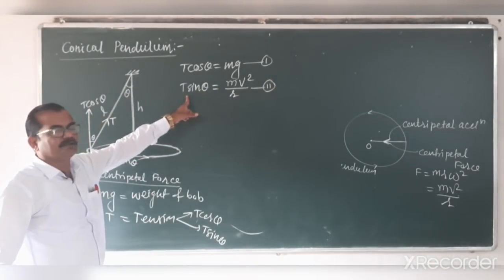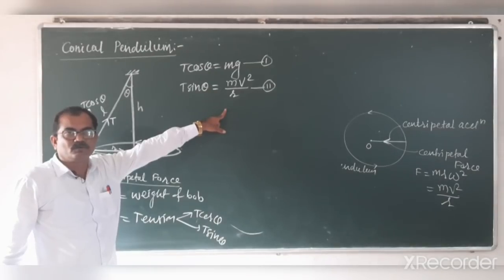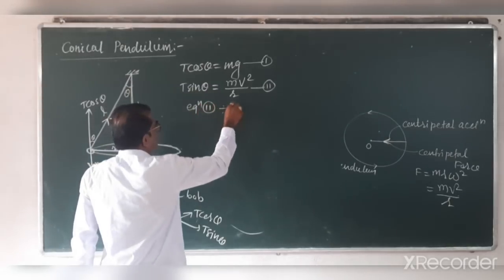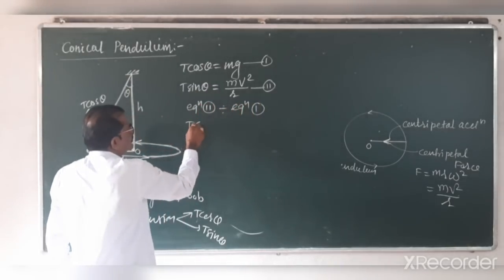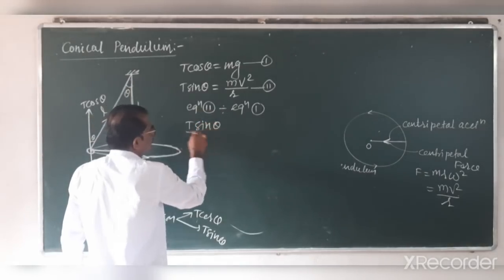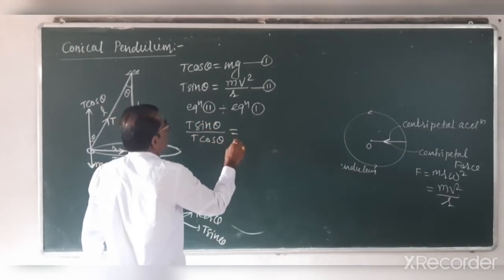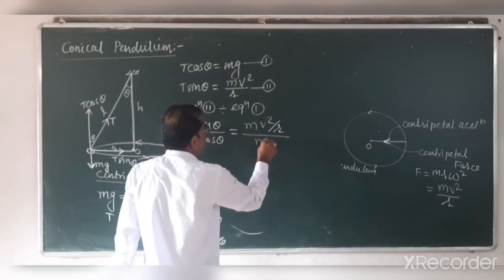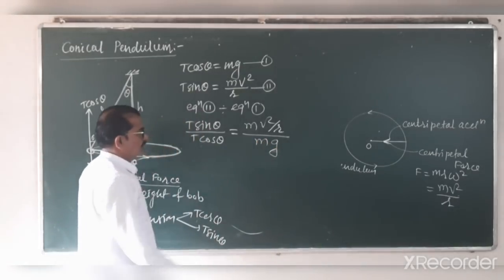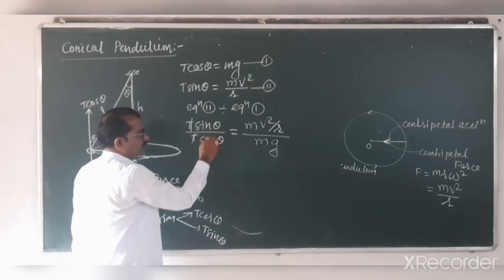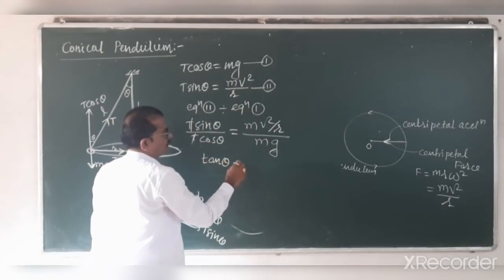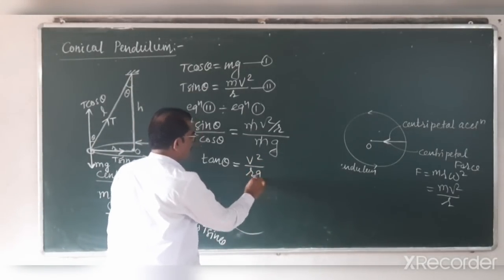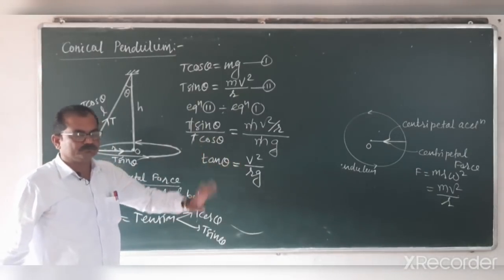T sin theta provides the necessary centripetal force for circular motion. Dividing equation 2 by equation 1: T sin theta upon T cos theta equals mv squared upon R, divided by mg. The T and T cancel; sin theta upon cos theta equals tan theta; mass cancels; giving tan theta equal to v squared by Rg.